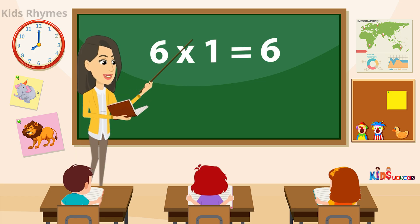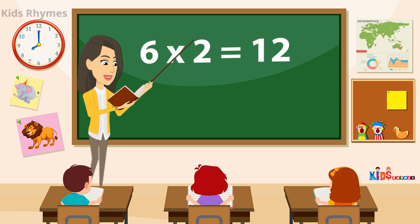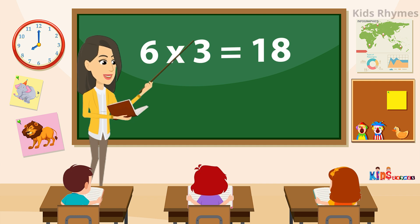Six ones are six. Clap your hands, do some tricks. Six twos are twelve. Put your books back on a shelf. Six threes are eighteen. Dance around, stay so keen.